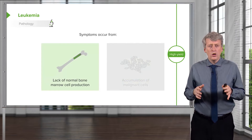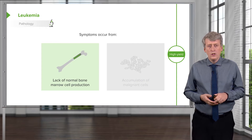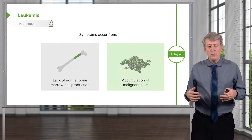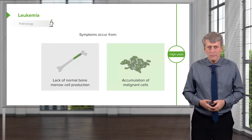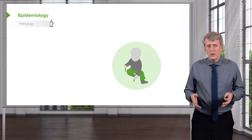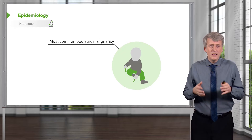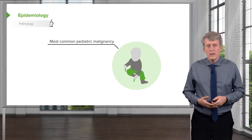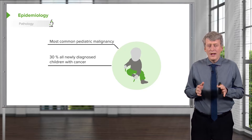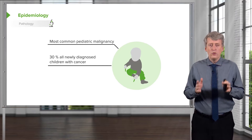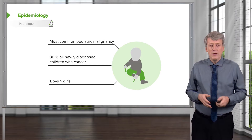Symptoms can occur from a lack of normal bone marrow cell production or from accumulation of malignant cells in tissues that otherwise shouldn't have them. Leukemia is the most common pediatric malignancy — 30% of all newly diagnosed children with cancer have leukemia, and boys typically get it a little more than girls.